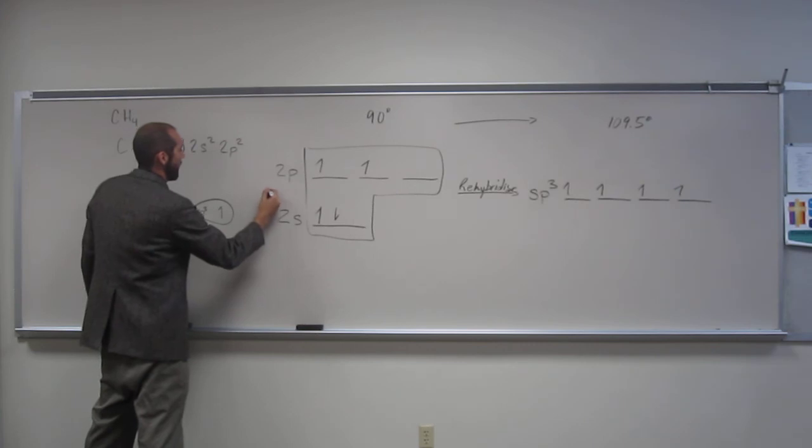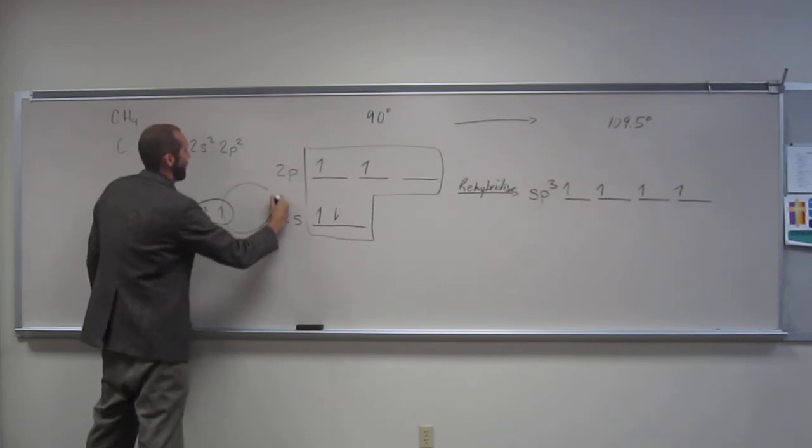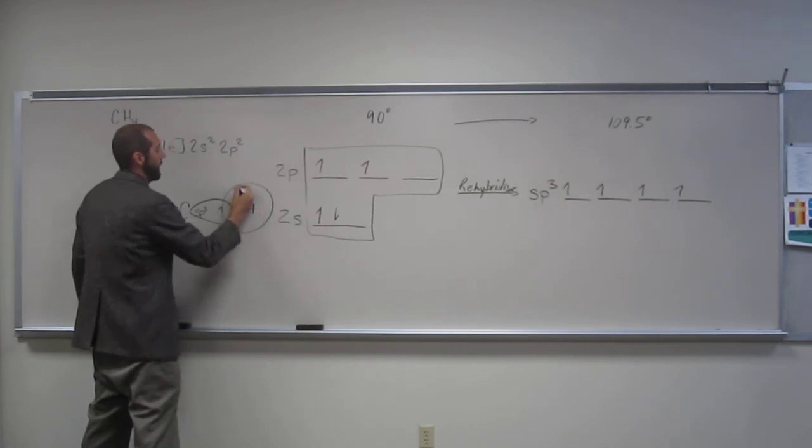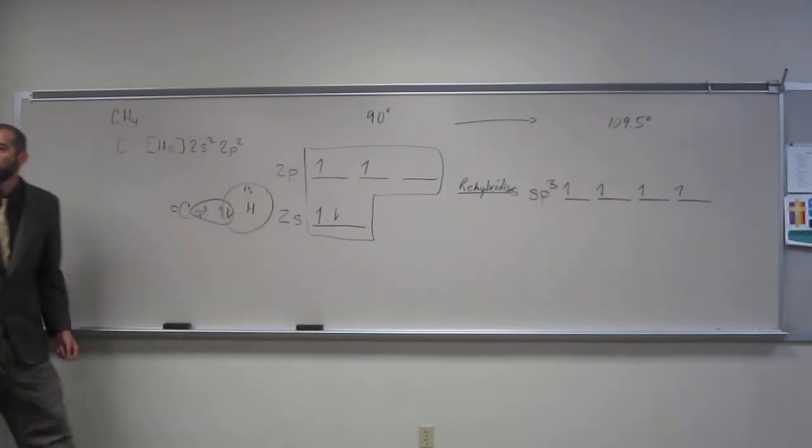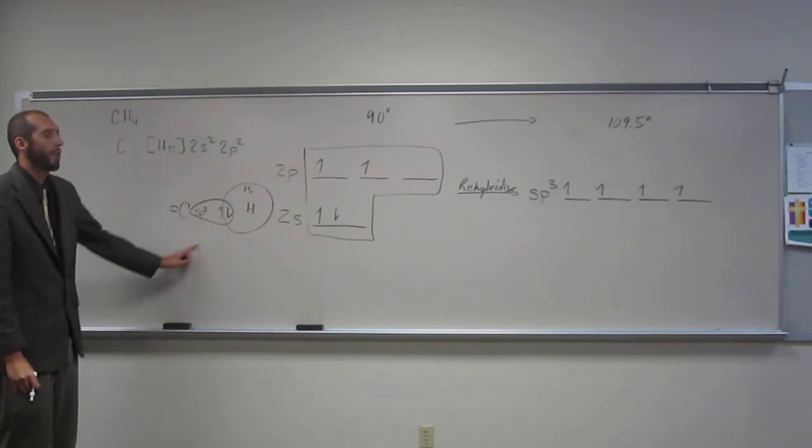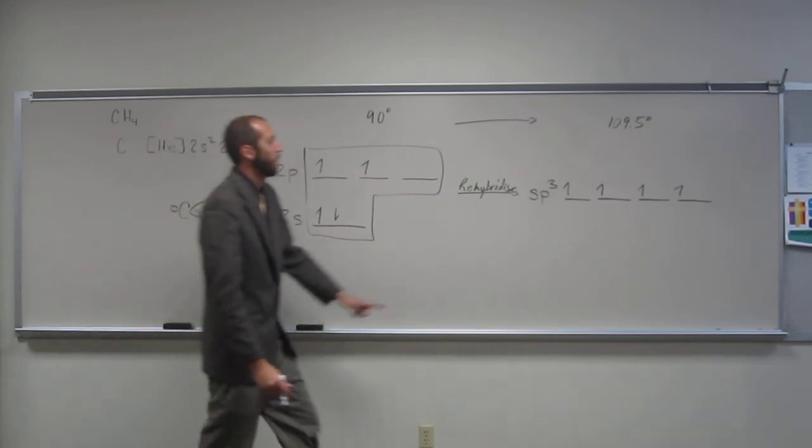Now what's going to happen is the hydrogen atom. This is the hydrogen atom with its 1s orbital. It's going to have its 1s orbital and kind of stick on to that sp3. But that's going to happen three times. It's going to fill up.